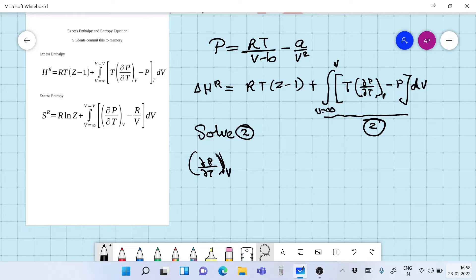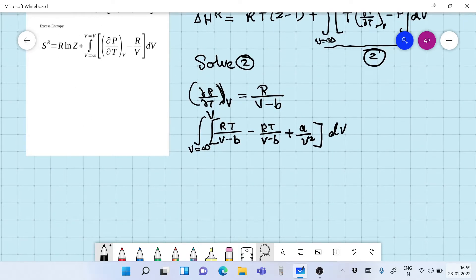So ∂P by ∂T at constant volume V for a Van der Waals gas is going to be nothing but R over V minus B. Therefore the integral is going to be V infinity to V, RT upon V minus B minus RT upon V minus B that is P, you replace as RT upon V minus B plus A by V square dV. Now this is equal to integral V infinity to V.